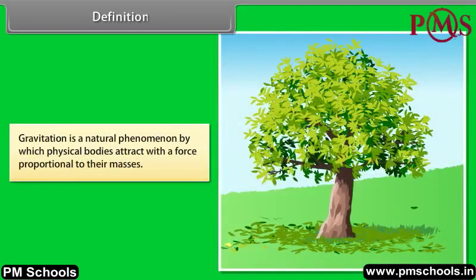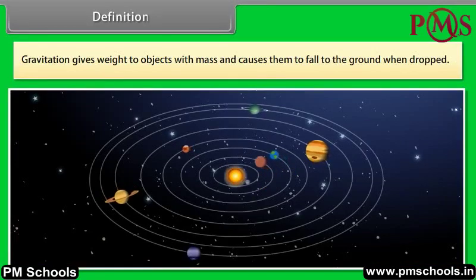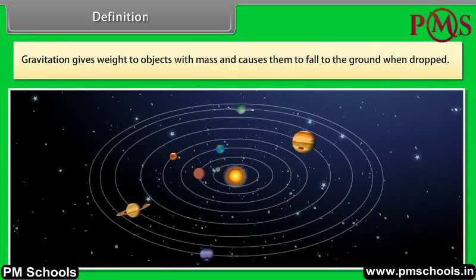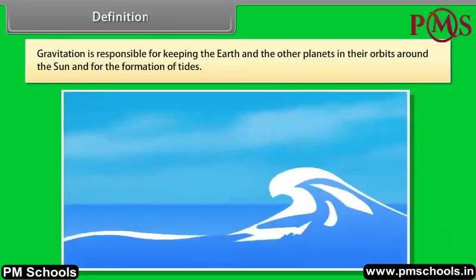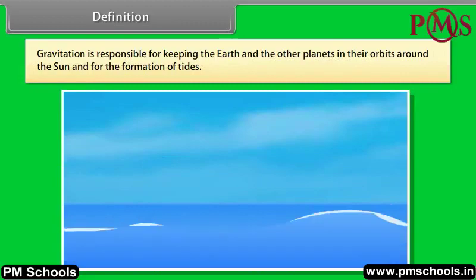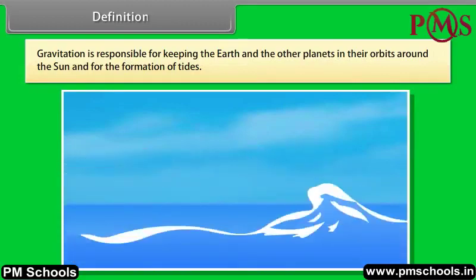Gravitation is a natural phenomenon by which physical bodies attract with a force proportional to their masses. Gravitation is most familiar as the agent that gives weight to objects with mass and causes them to fall to the ground when dropped. Gravitation is responsible for keeping the earth and the other planets in their orbit around the sun and for the formation of tides.